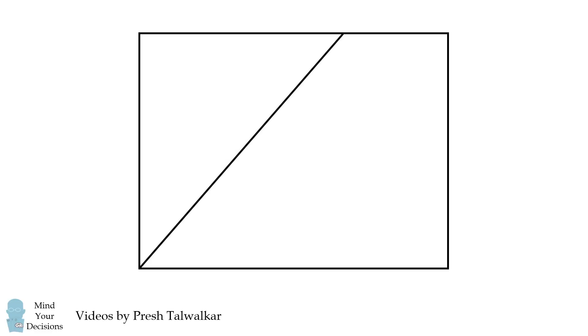Mind your decisions, I'm Presh Talwalkar. In a rectangle, two line segments are drawn, dividing the rectangle into four regions. Three of the regions have areas of 1, 3, and 4. What is the area of the fourth region?